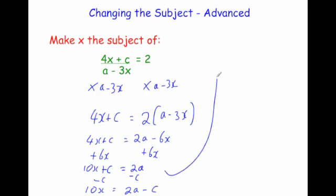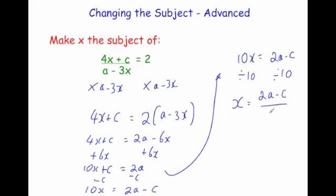We have 10x equals 2a minus c. We want x on its own, so since this is 10 times x let's divide both sides by 10. That gives x equals 2a minus c all divided by 10. And that's it — that's how you change the subject for some slightly more advanced questions. You may get different types in exams but it's just about following these techniques.